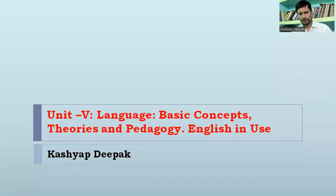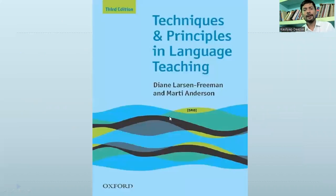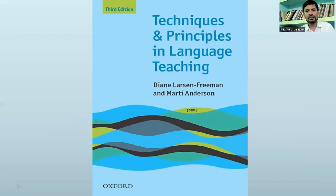This unit is one of the easiest but students pay less attention to it. The project for unit 5 is language — basic concepts, theories, pedagogy, and English in use. We will cover basic concepts. The subject has units 1 through 5. This is one of the most important books to cover this particular unit, but not the only one. You have to read several other books, terms, pedagogies, and other things. All together they can make something which you need to crack the entrance exam.